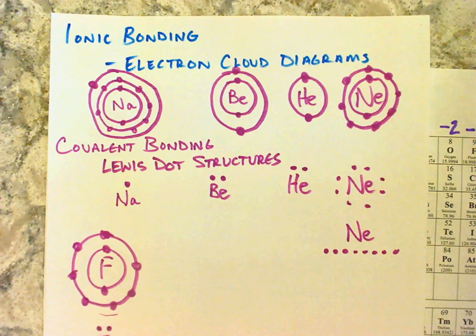And so when it comes to writing out the Lewis dot structure, this thing has seven electrons in its outer shell. So it's going to have seven dots. It's going to look like this. So there's the Lewis dot structure for that.